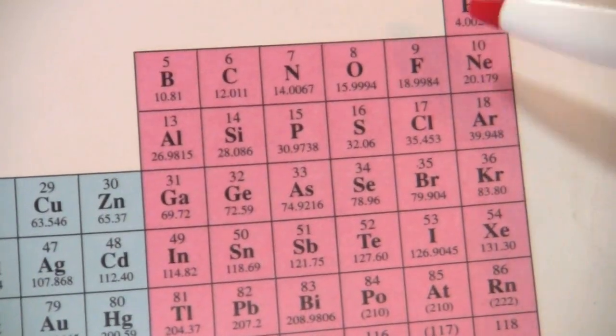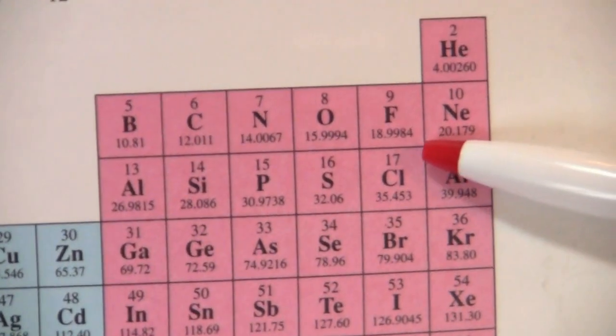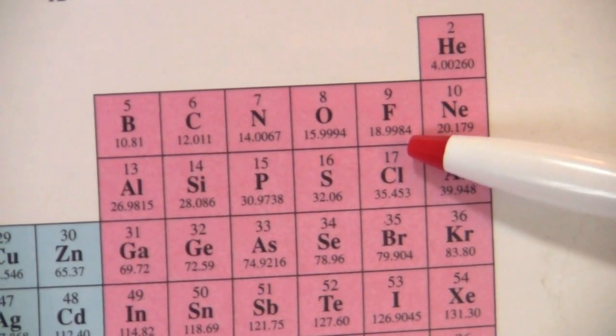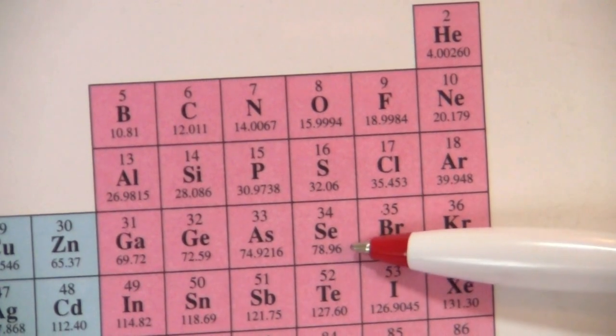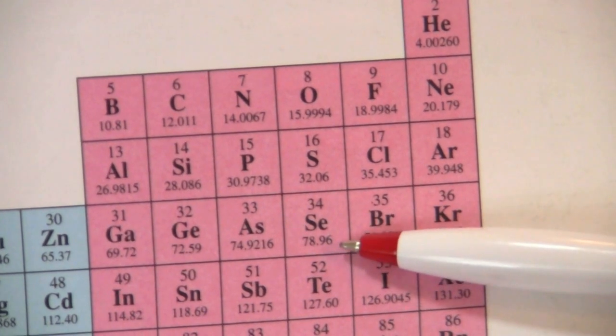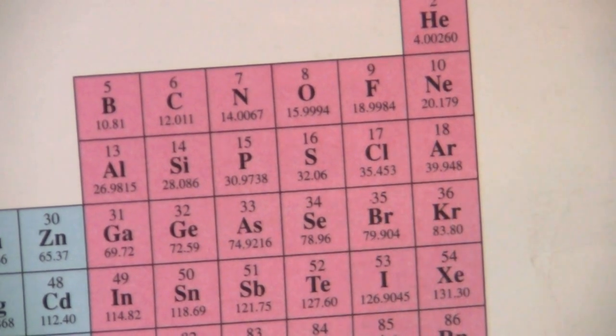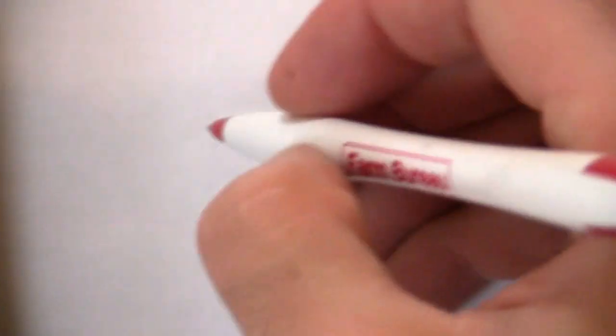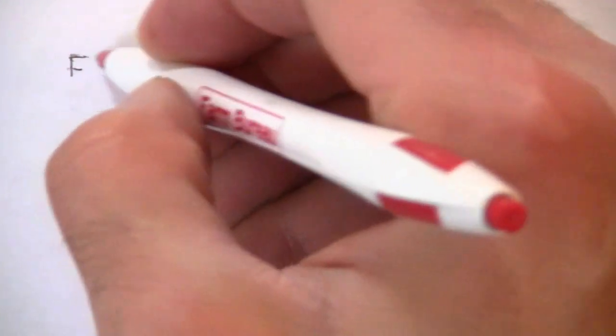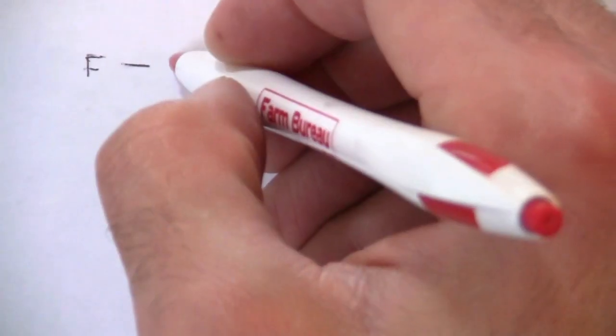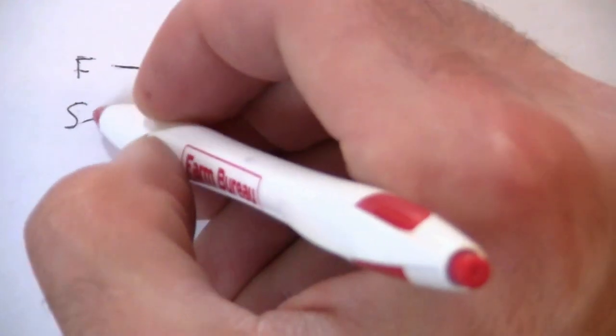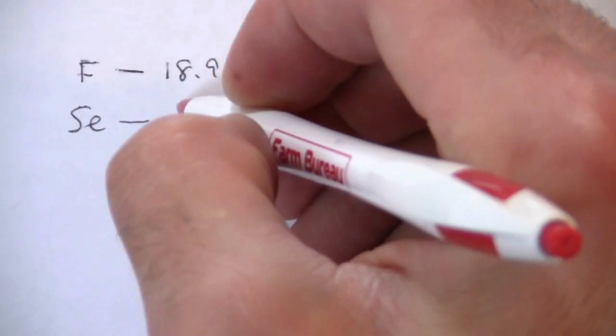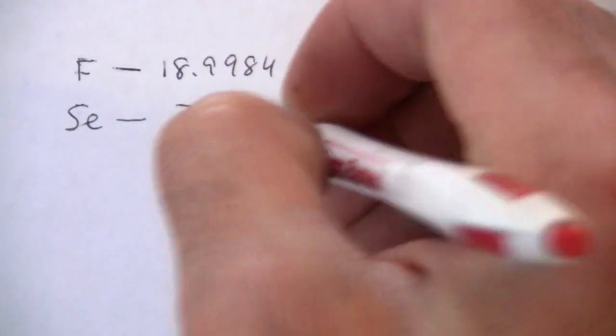First we look at the periodic table. Here is fluorine, it has an atomic mass of 18.9984, and selenium has an atomic mass of 78.96. Let's write this down here.